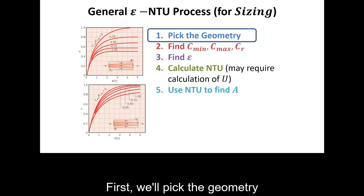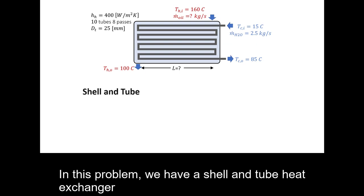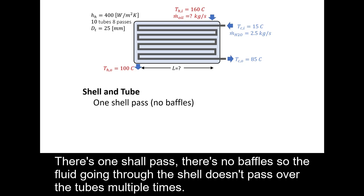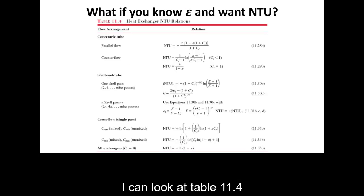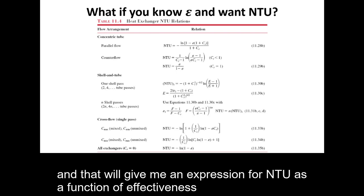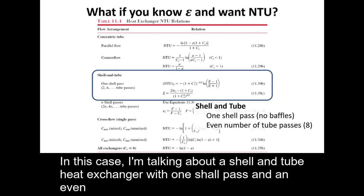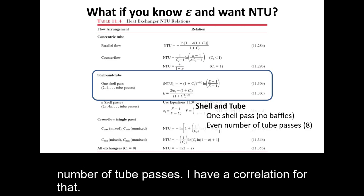First we pick the geometry. We have a shell and tube heat exchanger with one shell pass. There are no baffles, so the fluid going through the shell doesn't pass over the tubes multiple times. There's an even number of tube passes at 8. From table 11.4 I can get an expression for NTU as a function of effectiveness for a shell and tube heat exchanger with one shell pass and an even number of tube passes.